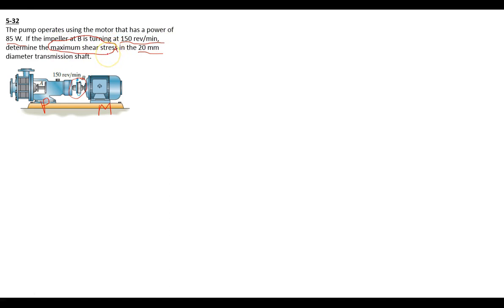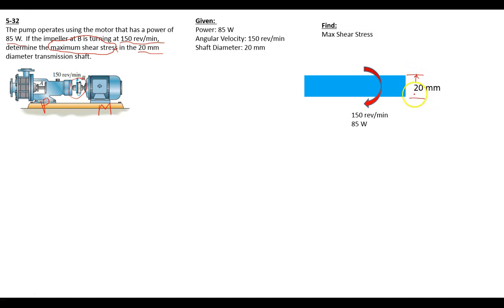So we can use some general engineering practices and lay it out. We've been given the power, angular velocity, and the shaft diameter of 20 millimeters. We're trying to find our maximum shear stress. We have a free body diagram showing the diameter of the shaft, which is 20 millimeters, the velocity and power. We've got this torsion equation. We are looking for the maximum shear stress.